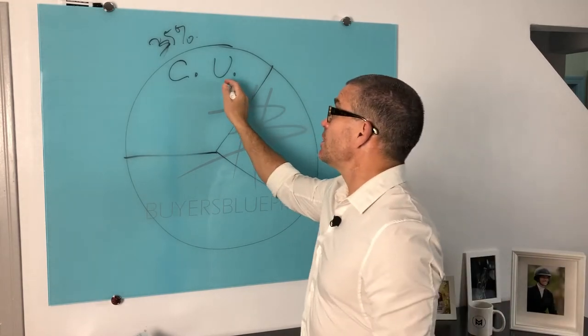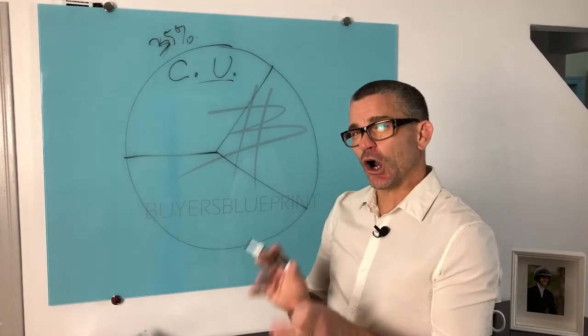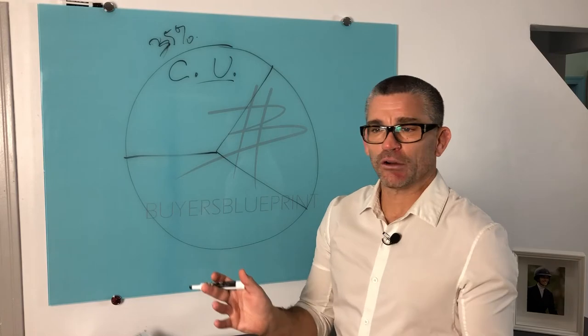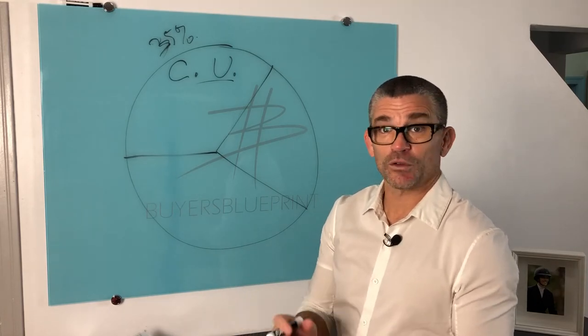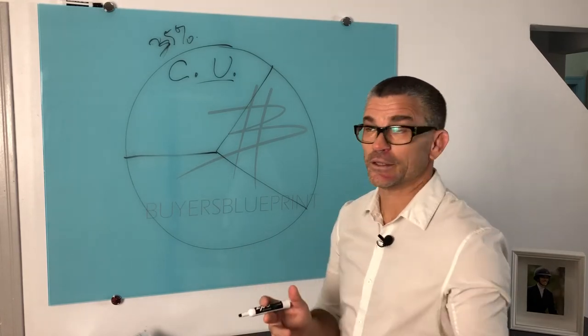So credit utilization is more of a short-term thing, which is a car loan thing, because car loans are generally four, five, six years, whereas mortgages are 30 years plus in the States.